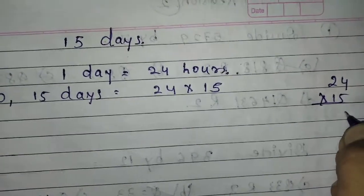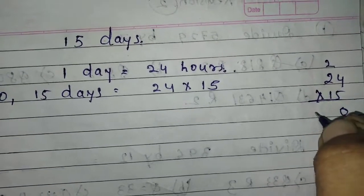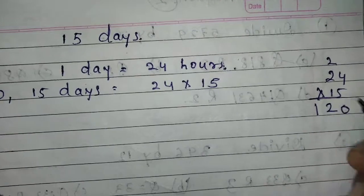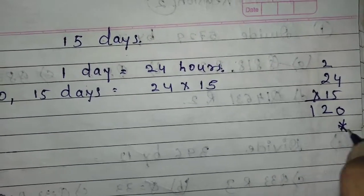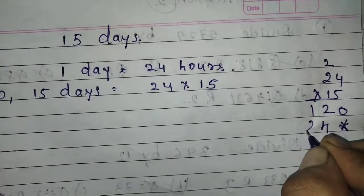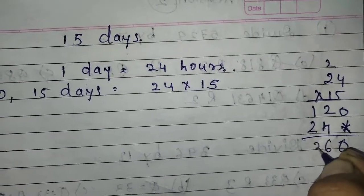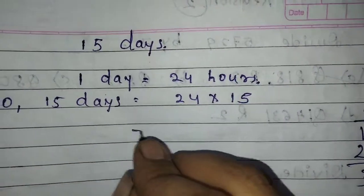5 fours are 20. 5 twos are 10, 11, 12. 4 ones are 4. 2 ones are 2. 0, 4 plus 2 is 6, 3. 360 hours.